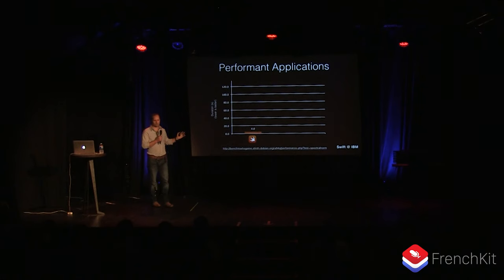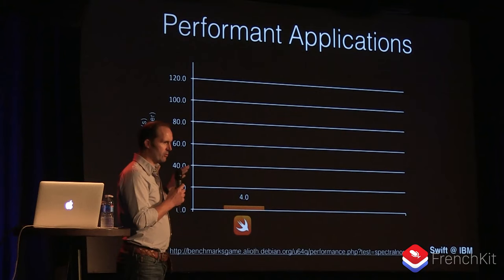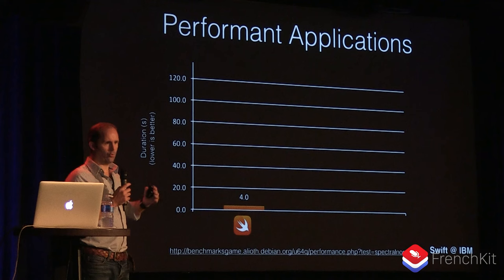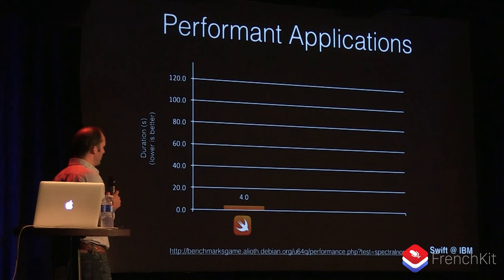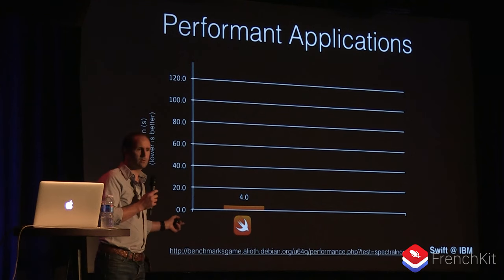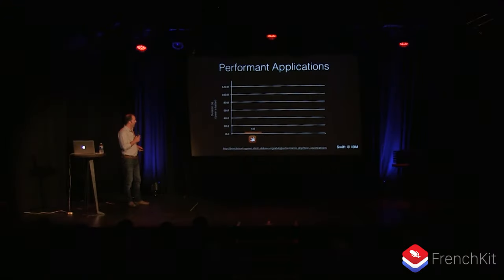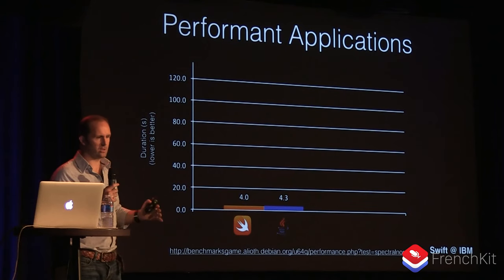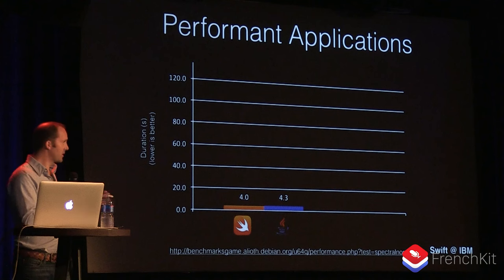The tests run on four CPUs, so they use more than one concurrent piece of work at the same time. The Swift implementation completed in four seconds — it uses Dispatch for concurrency and the standard library for language constructs. When we run the same test with Java, Java completes in 4.3 seconds. So Swift was actually slightly faster than Java for this particular benchmark, which is really impressive because Swift has only been around a couple of years, whereas Java is 22 years old.